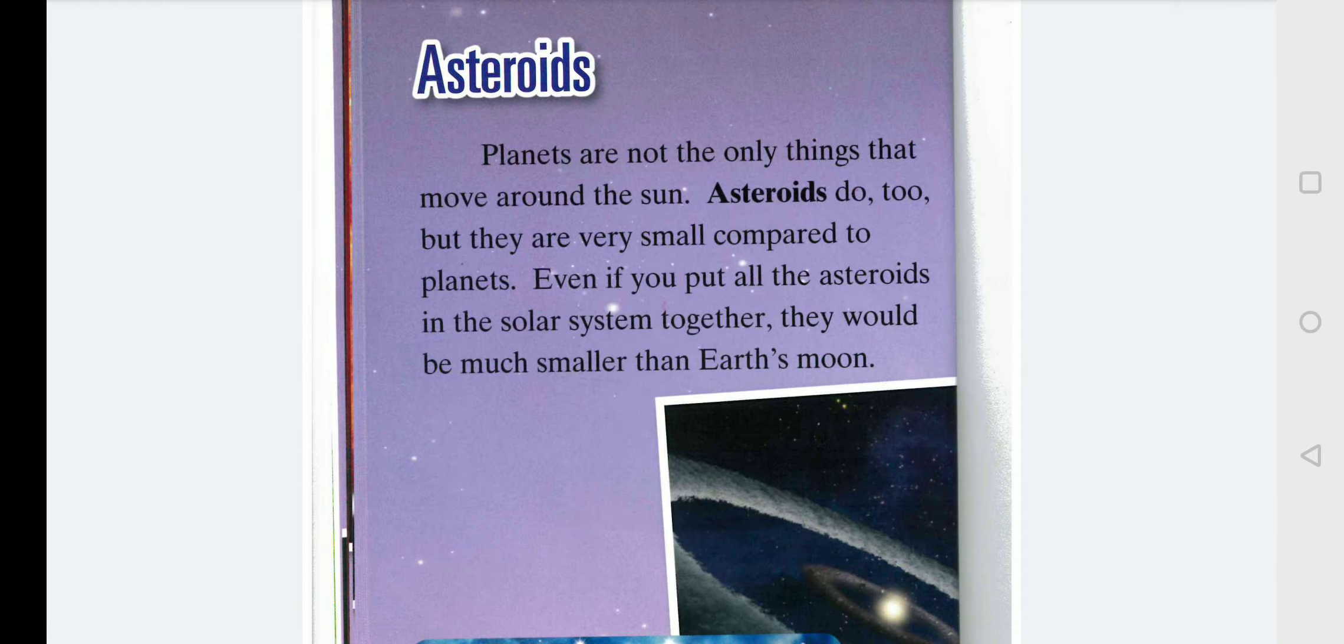Asteroids. Planets are not the only things that move around the Sun. Asteroids do, too, but they are very small compared to planets. Even if you put all the asteroids in the solar system together, they would be so much smaller than the Earth's Moon.